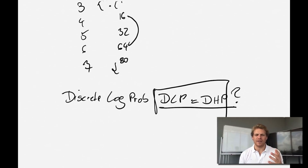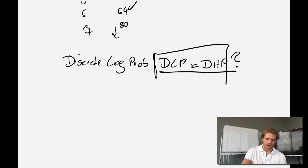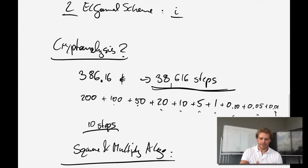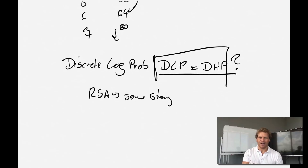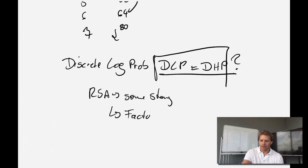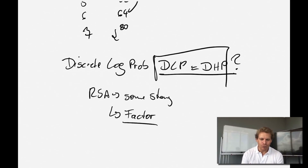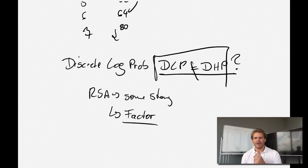There might be ways to attack these systems far more efficiently. For example, in RSA there might be approaches that avoid factoring entirely. Some famous researchers think this, and maybe in 30 years someone will prove that the Diffie-Hellman problem is not equivalent to the discrete logarithm problem — or that Diffie-Hellman is actually easier to solve. We simply don't know yet.